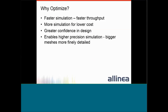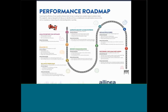So why optimize? HPC has actually been a little late to the game in really doing a good job and focusing on optimization. The goals are: faster simulation — getting to your results quicker; lower cost per simulation; enabling more utilization of the resource you have; getting better throughput on your cluster; greater confidence in design for scientists publishing results; and getting better precision with larger meshes. The plan is what we call a performance roadmap — a guide for how to proceed through your optimization process.